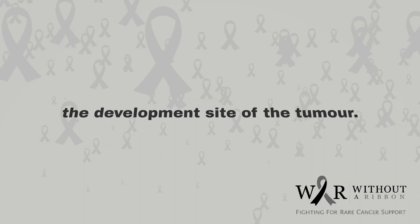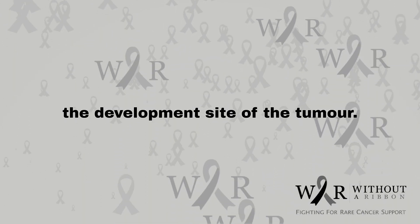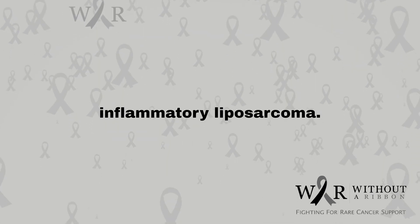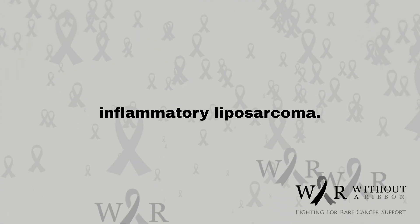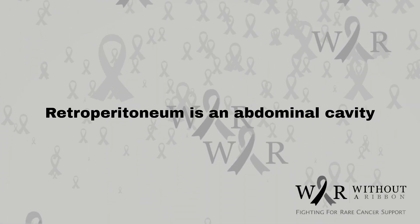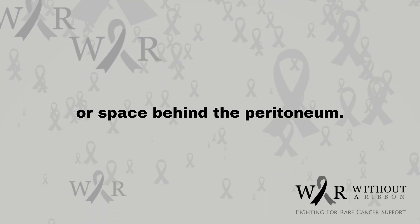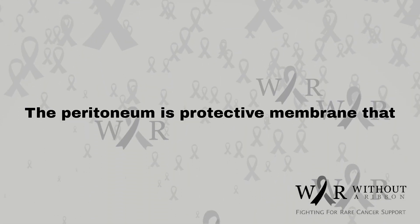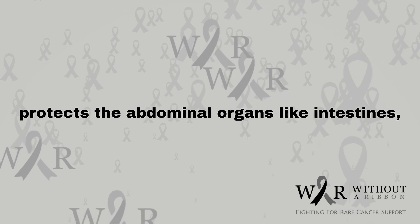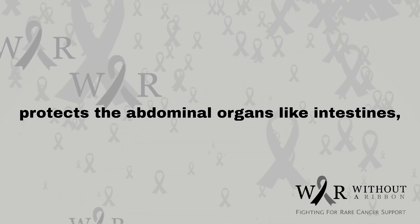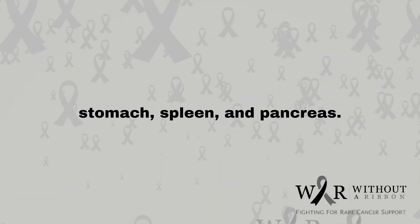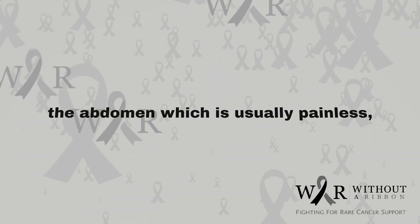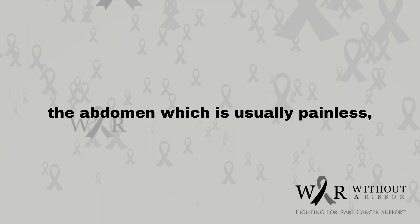Signs and symptoms vary according to the development site of the tumor. The following are signs and symptoms of retroperitoneal inflammatory liposarcoma. The retroperitoneum is an abdominal space behind the peritoneum — the protective membrane that covers abdominal organs like the intestines, stomach, spleen, and pancreas.